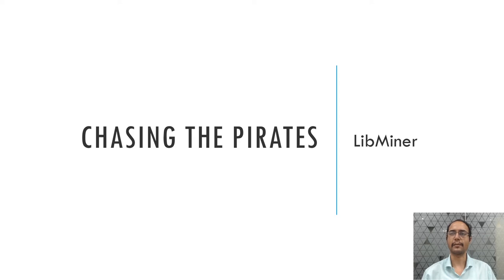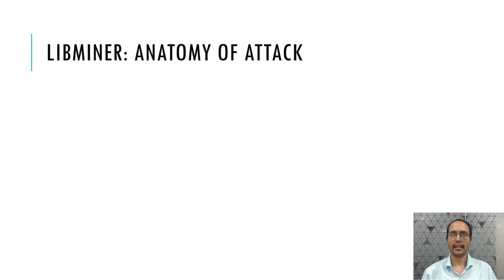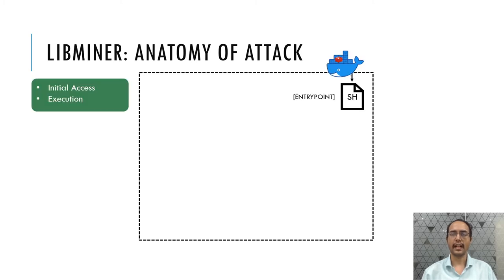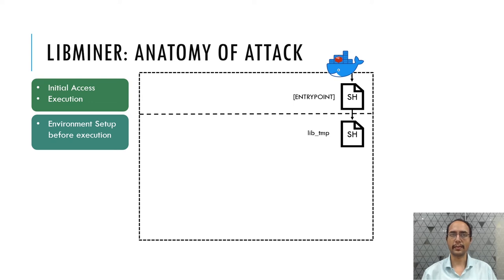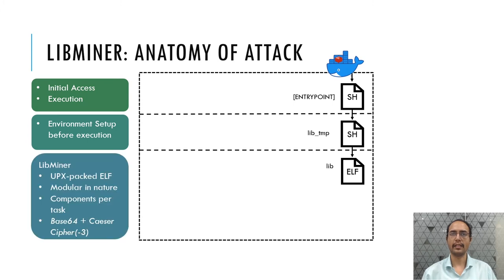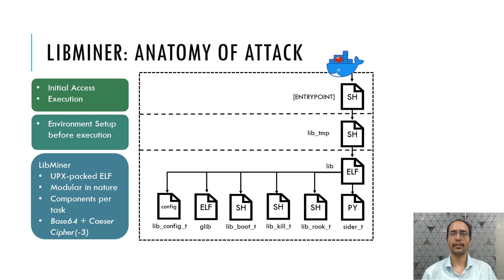Now we will deep dive into a couple of case studies in the section 'Chasing the Pirates.' The first case study is LibMiner. LibMiner executes in multiple stages and downloads several components during the course of execution. It targets containers executing a Redis server. The attack initiates from the container entry point, which executes a shell script. This shell script downloads another shell script which sets the environment for execution of LibMiner and downloads and executes a LibMiner executable. LibMiner is a UPX-packed ELF file which is modular in nature and has several functions written to perform individual tasks.